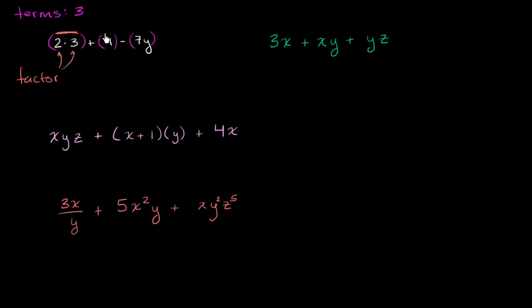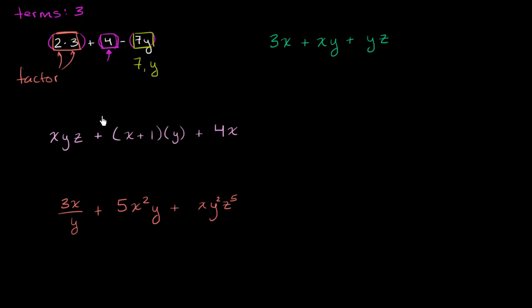What about the second term? The second term here has only one factor — just the four. It's not being multiplied by anything. And the third term here has two factors: it's the product of seven times y. So we have a seven and a y.